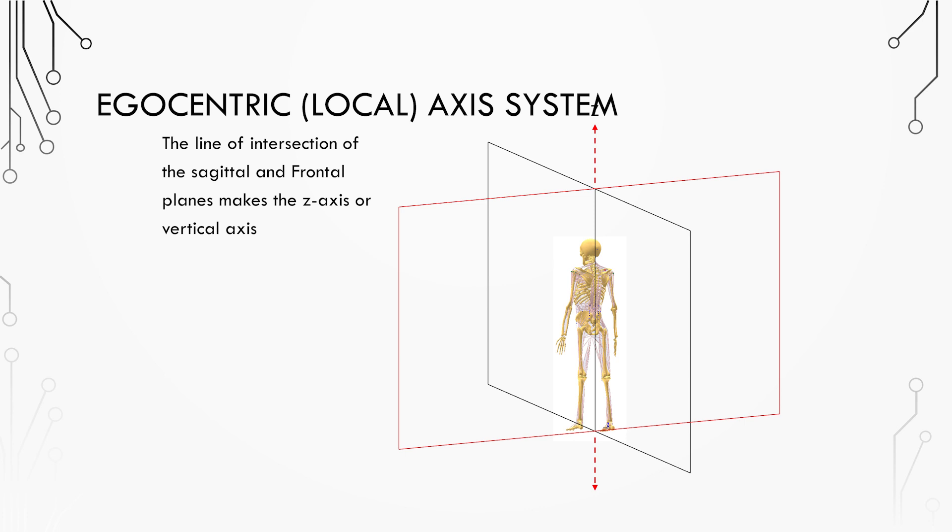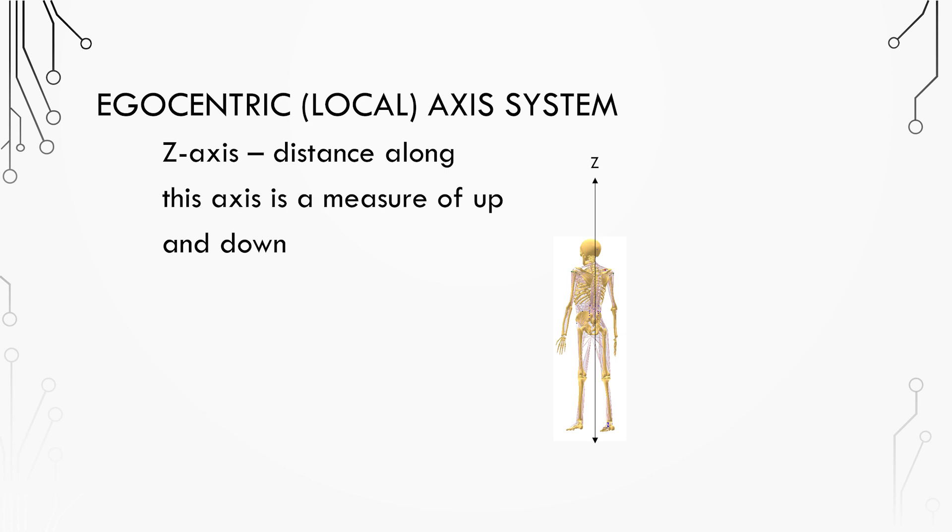The line of intersection of the sagittal and frontal planes make the z-axis, or vertical axis, and any movement along this axis is a measure of up and down. Objects can also rotate around this axis.